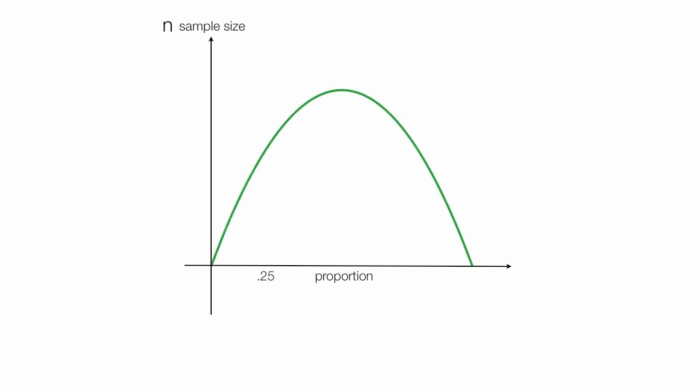I'm going to draw a graph with sample size on the vertical axis, n, and along the horizontal axis, I'm going to put proportion. The sample size for proportion is very symmetrical. So if I look at the sample size for 0.25 or the sample size for 0.75, it's the same.